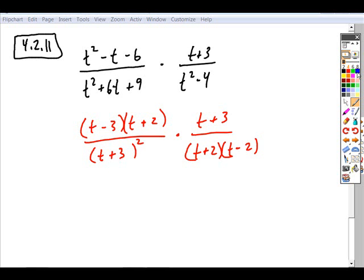So once you get it completely factored, you can now look to cancel any common factors. So t minus 3 doesn't cancel, the t plus 2 does. t plus 3 cancels with one of these, still leaving one.